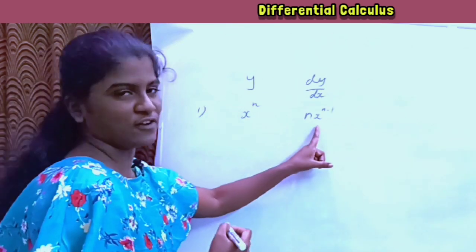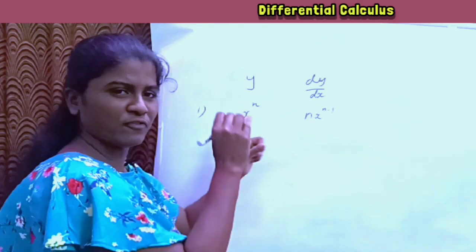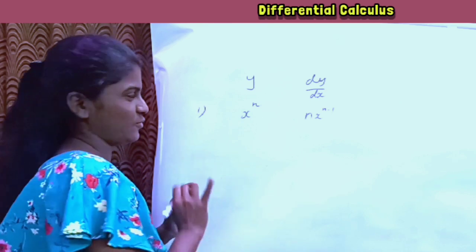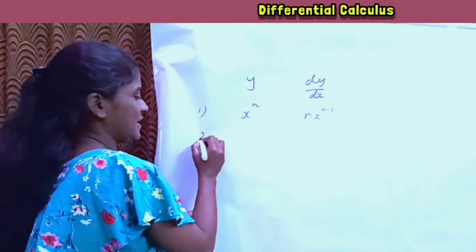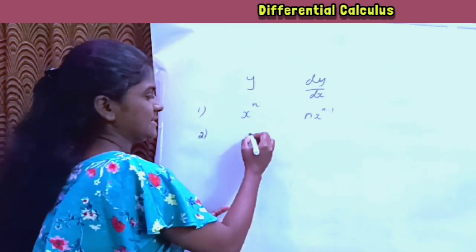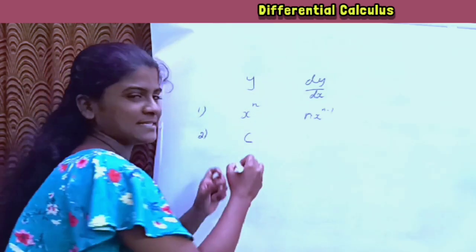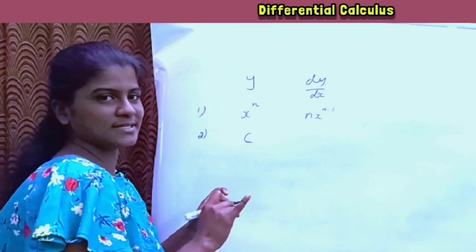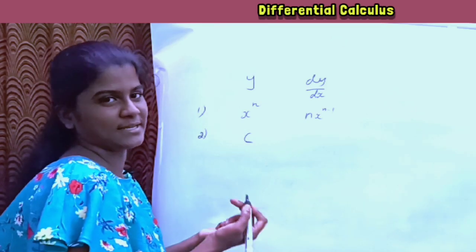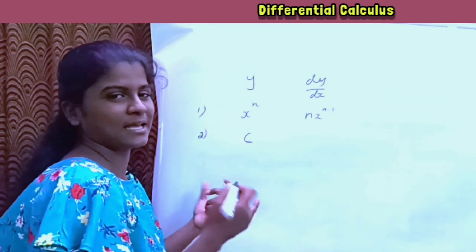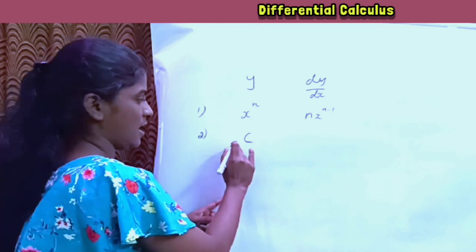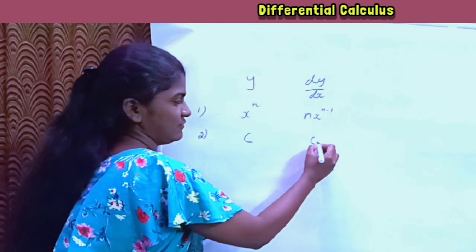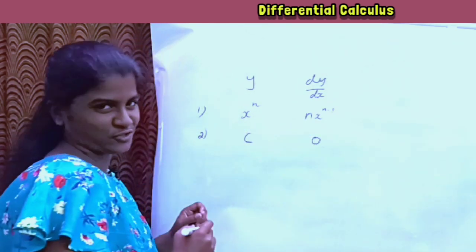This is the first formula for differentiation. Now the second formula: C, which is nothing but a constant. A constant is a number — 7, 8, 9. If we differentiate any constant number, the answer is 0.